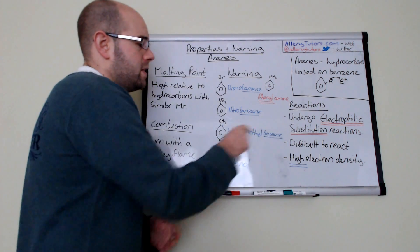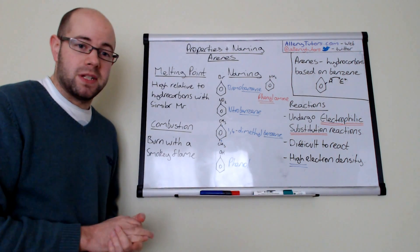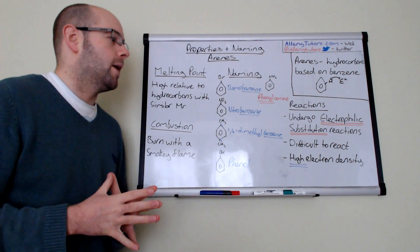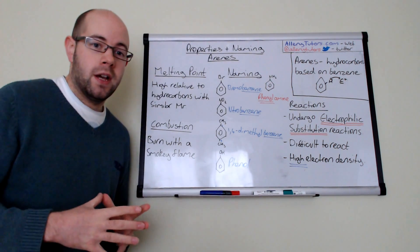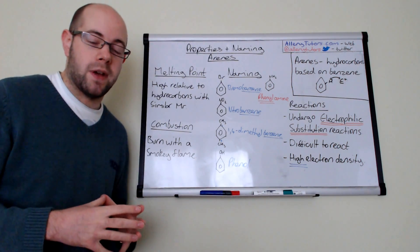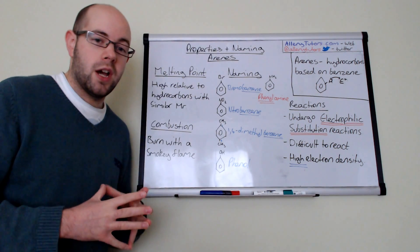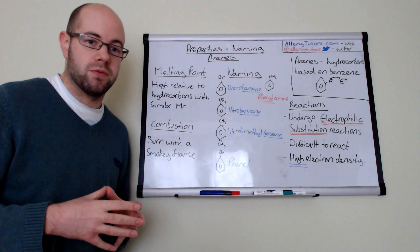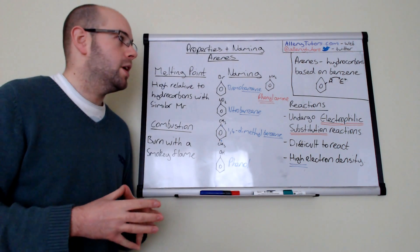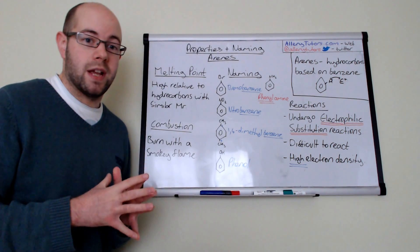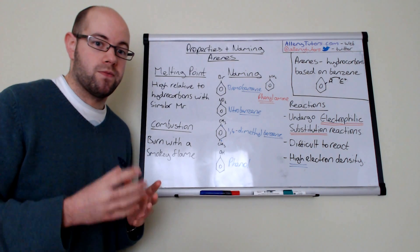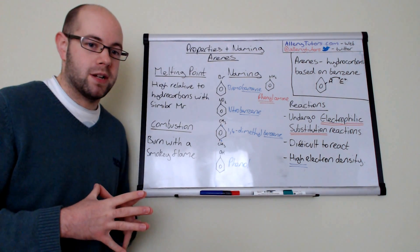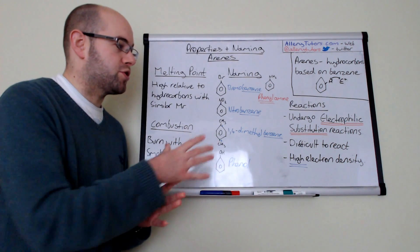Now benzene is actually very difficult to react. It's a really stable molecule. And therefore, your electrophile generally has to have a full positive charge. Molecules with a delta positive charge actually find it really difficult to react with benzene. It's so stable. So your electrophile generally has to have a positive charge - a really reactive electrophile to try and break into this benzene ring structure.